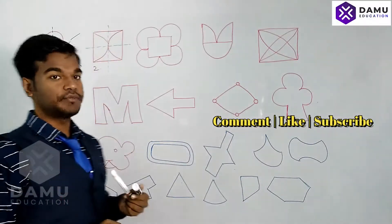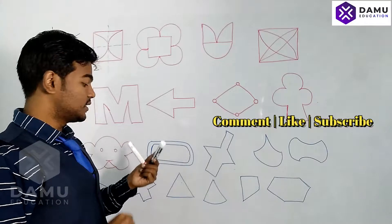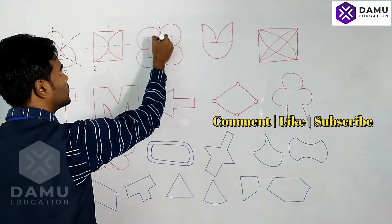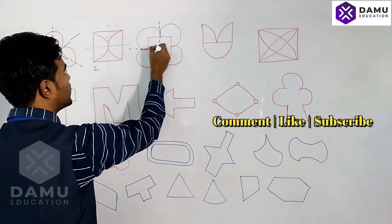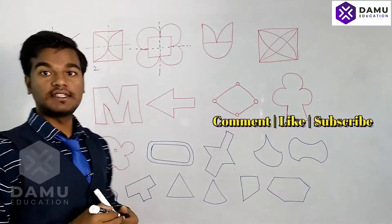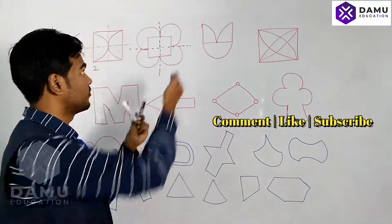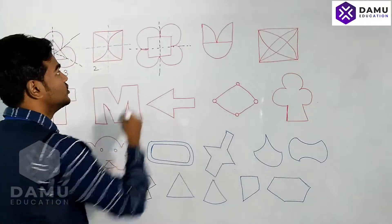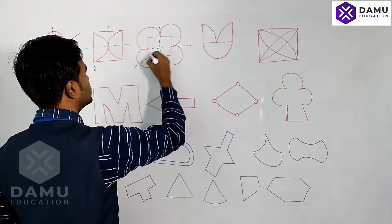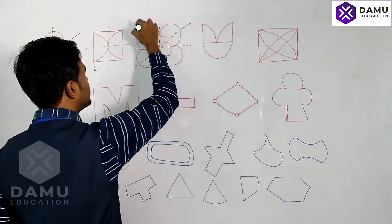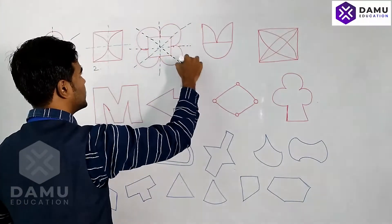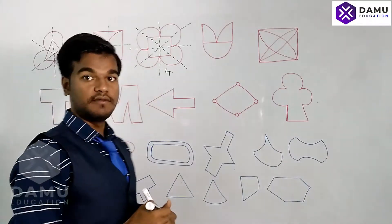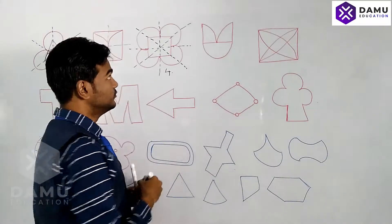Next is a square. For a square, we draw vertical and horizontal lines of symmetry — if you fold along either, the halves will coincide. Then for a square you can also fold along the diagonals, and those will coincide too. So how many lines of symmetry? Four lines of symmetry for a square.